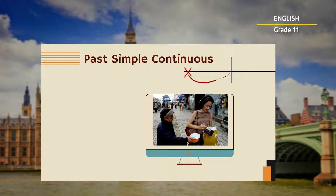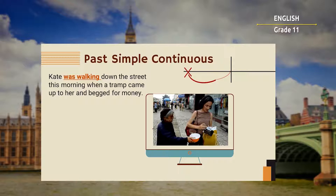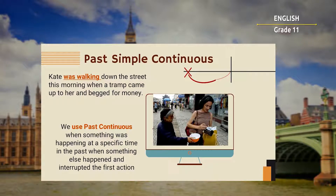The next narrative sentence: Kate was walking down the street this morning when a tramp came up to her and begged for money. We use the past continuous when something was happening at a specific time in the past, when something else happened and interrupted the first action. The emphasis is on the duration of the activity in the past. The past continuous is often used with the simple past to show that one action was in progress when another action occurred.